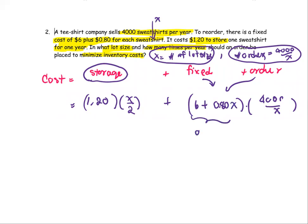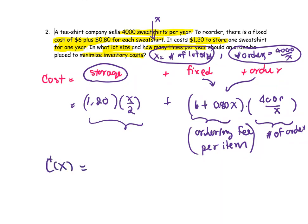It's going to be the fixed cost per order multiplied by the number of orders per year, which is 4,000 divided by X. And the ordering fee per order is $6 plus $0.80 for each sweatshirt. This is the ordering fee per item and number of orders. The part here is the inventory cost, with the storage fee per item multiplied by the average. The cost will be put together as 1.20 times X over 2, or 0.6 times X.